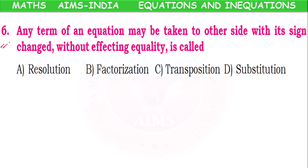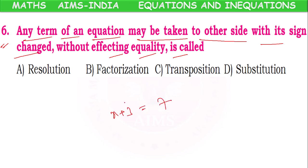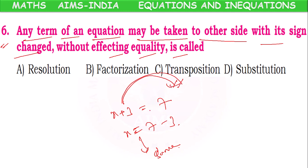Number six: any term of an equation may be taken to the other side with its sign changed, without affecting equality — this is called what? For example, x + 3 = 7: we can take +3 to the RHS so it becomes −3. The equality remains the same, but one element from LHS went to RHS by changing its sign. This is called transposition.